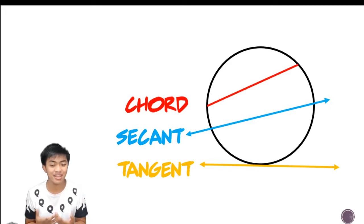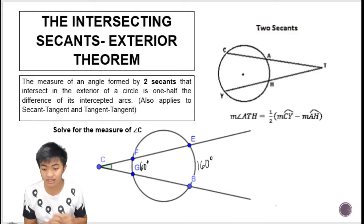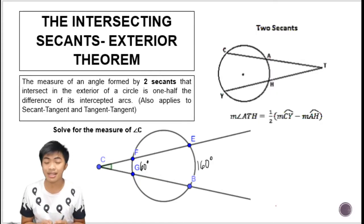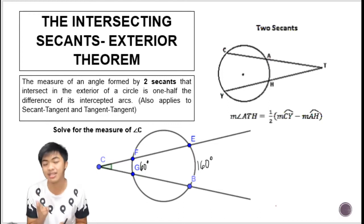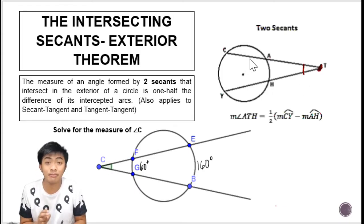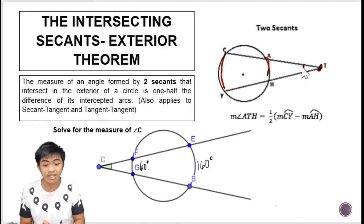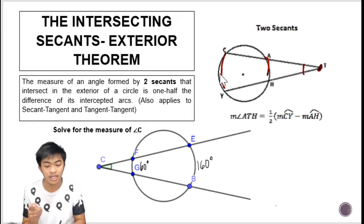Let's start with the Intersecting Secants Exterior Theorem. It states that the measure of an angle formed by two secants that intersect in the exterior of a circle is one half the difference of its intercepted arcs. This theorem also applies to secant-tangent and tangent-tangent cases. When two secant lines meet outside the circle, an angle is formed that intercepts two arcs — one bigger arc and one smaller arc. To find the degree measure of the angle, subtract the smaller arc from the bigger arc and divide by two.